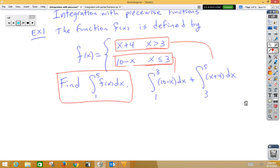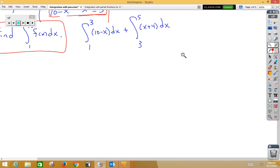Now let's work those out separately. In our first integral, if we integrate 10, we get 10x. If we integrate negative x, we get negative x squared over 2, and our bounds are from 1 to 3.